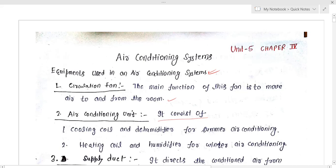The first equipment is the circulating fan. The main function of this fan is to move the air to and from the room. The circulation fan is basically used to push the air into the room as well as to take the air from the room.